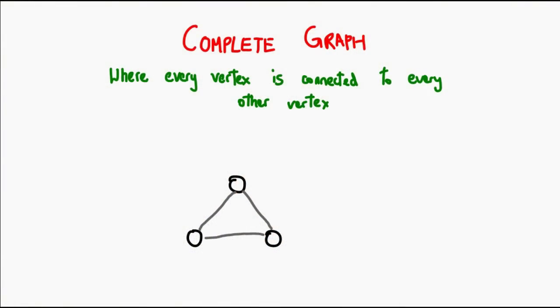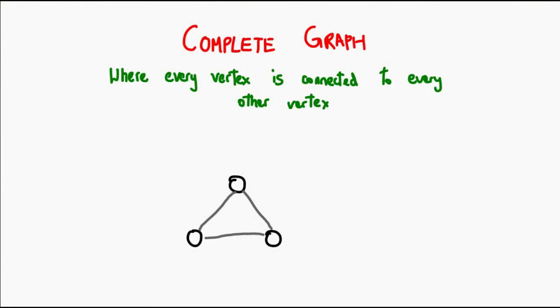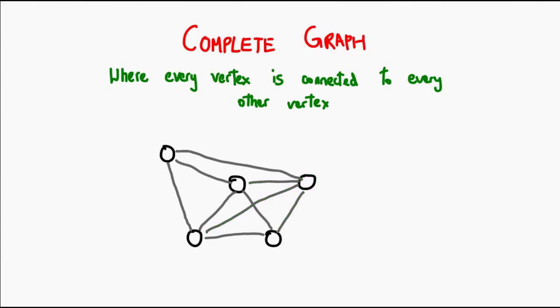We have complete graphs — a graph where every single vertex has an edge to every other vertex. In a simple graph of three nodes this is trivial, and even adding one more node isn't too complicated. But as the number of vertices gets greater and greater, the number of edges we have to add also grows. Once your graph gets big and you still want it to be a complete graph, there are going to be many edges.